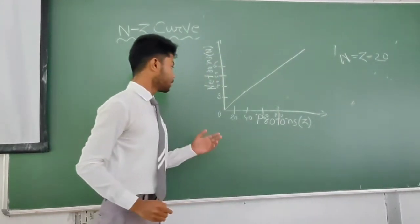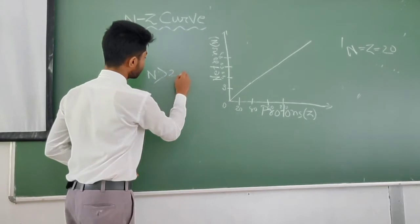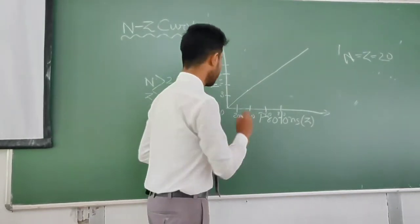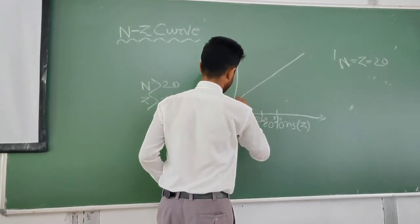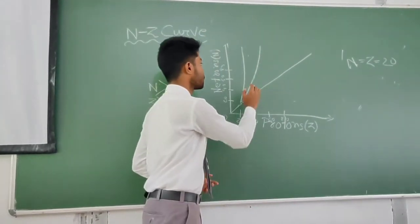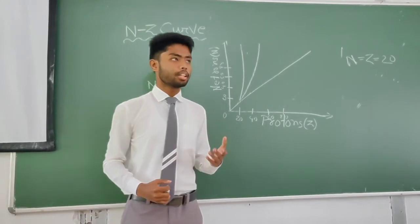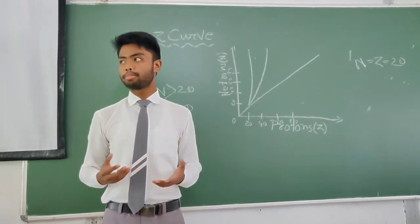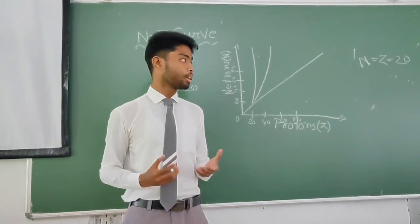But what happens when this proton number and neutron number is greater than 20 — that is N is greater than 20 and Z is greater than 20 — then this stability curve for stable nuclei is bent towards the neutron axis. We have one question: why is this curve bent towards the neutron axis? Because whenever the neutron number increases, in between the two protons the Coulomb repulsive effect becomes greater. So to dominate this Coulomb repulsive effect, we require more neutrons.